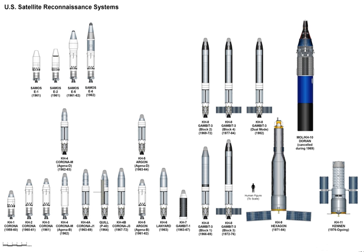President Johnson said: "I wouldn't want to be quoted on this, but we've spent $35 or $40 billion on the space program. And if nothing else had come out of it except the knowledge we gained from space photography, it would be worth ten times what the whole program has cost. Because tonight we know how many missiles the enemy has and, it turned out, our guesses were way off. We were doing things we didn't need to do. We were building things we didn't need to build. We were harboring fears we didn't need to harbor."